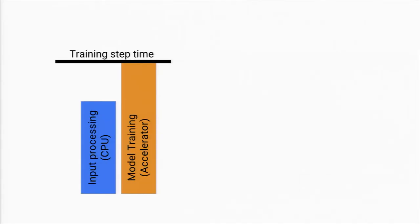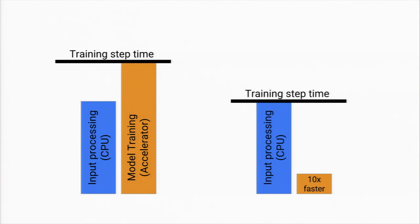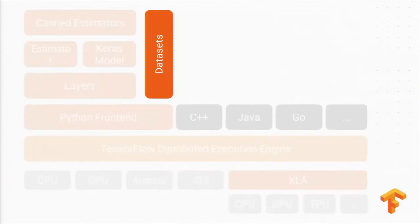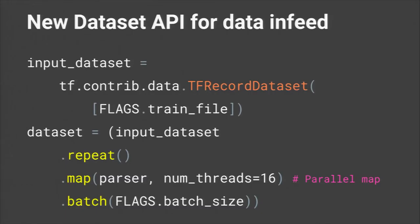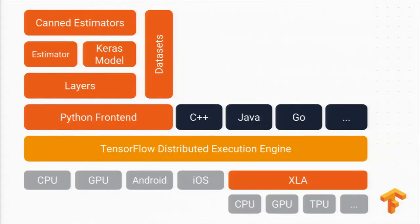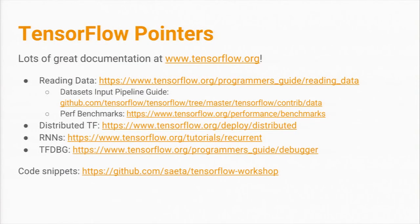One thing we've learned is that when these accelerators get 10 times faster, that doesn't necessarily improve your whole step time if you're bottlenecked on preprocessing. We really encourage you to use the new datasets API for much faster data in-feed for TensorFlow — this will help you across both GPUs and TPUs.